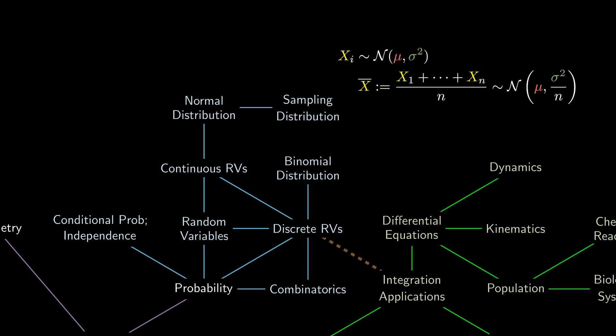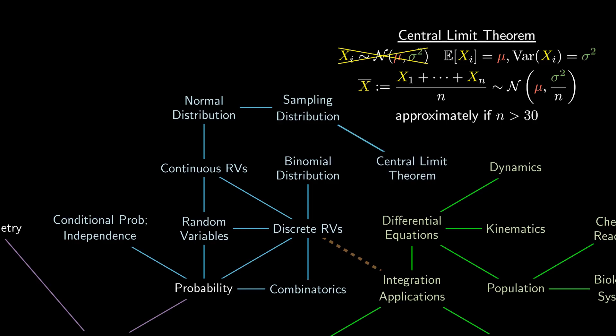But what happens if these observations do not follow a normal distribution, but whose mean is μ and variance is σ? Rather surprisingly, if n is sufficiently large, then we still get a normal distribution approximately. This is known as the central limit theorem, and it is the link between any distribution, including the binomial distribution, to the normal distribution.